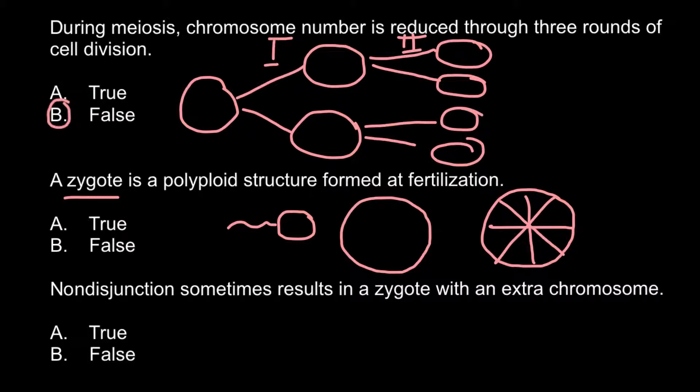We know that gametes are haploid, or we can call them monoploid. When one set of chromosomes joins with another set of chromosomes, we're going to get a diploid organism, so two sets of chromosomes here. But when we have two sets of chromosomes, we do not call such an organism polyploid.